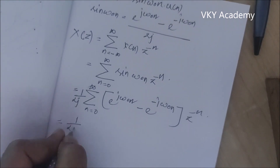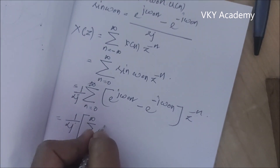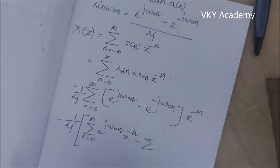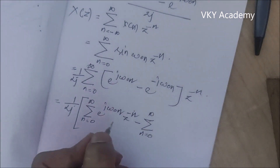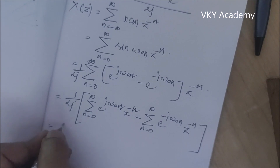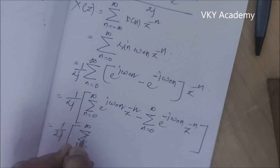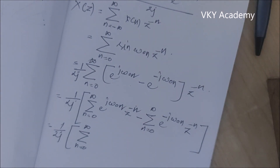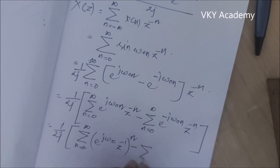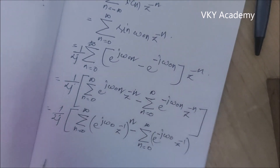This can be written as (1/2j) times: summation from n = 0 to ∞ of e^(jω₀n)·z^(−n), minus summation from n = 0 to ∞ of e^(−jω₀n)·z^(−n). Writing with a single power of n, this becomes (1/2j) times: summation of (e^(jω₀)·z^(−1))^n minus summation of (e^(−jω₀)·z^(−1))^n.